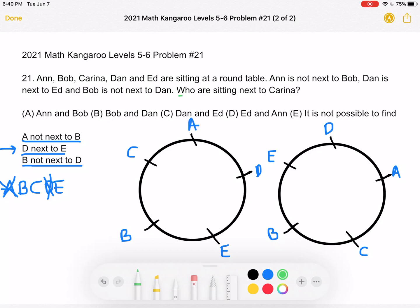So the question's asking, which two people are sitting next to Karina? So Karina is here. We have Bob and Anne. And again, here, we have basically the same thing, except the order is switched.